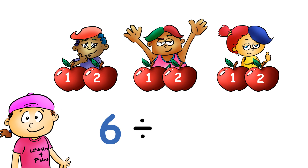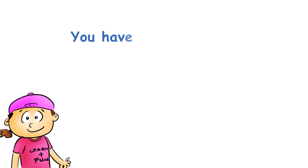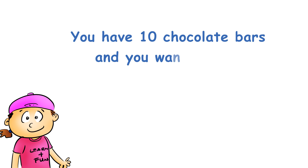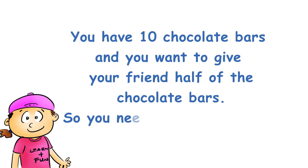So each friend will receive two apples. So six divided by three is two. Again, you have ten chocolate bars and you want to give your friend half of the chocolate bars, so you would need to divide ten by two.